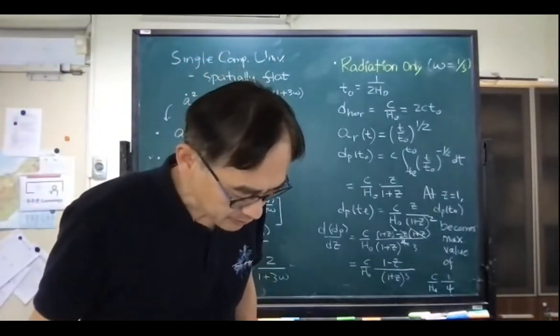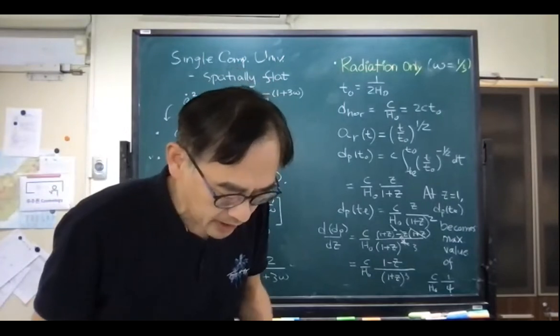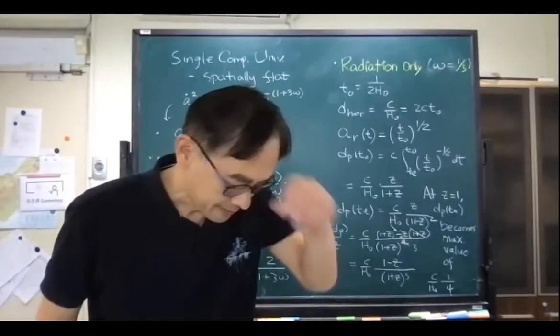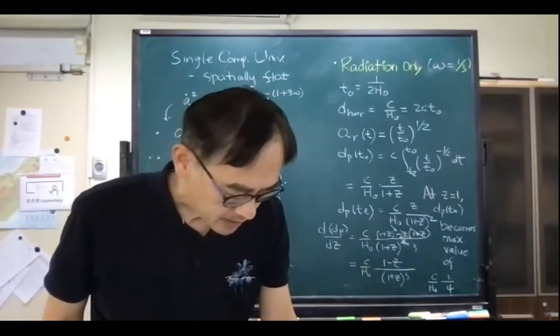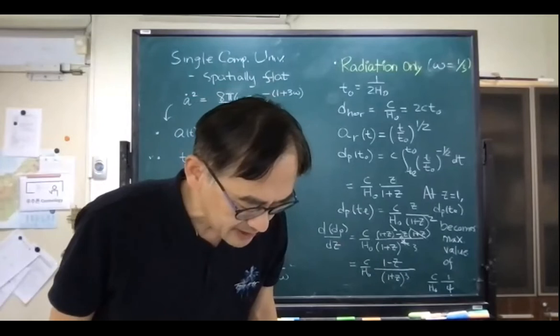So the maximum value of d_p(t_e) occurs at z equal to one, and that maximum value is approximately c/(4H₀). You can check figure 5.3 to see if the curve is plotted correctly using this fact.